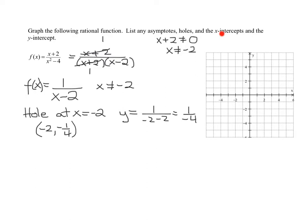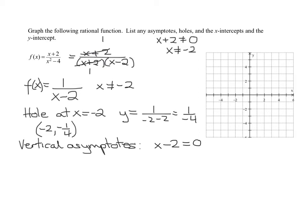Now we need to find asymptotes, x and y intercepts, using the simplified version of the function. For vertical asymptotes, we set the denominator of the reduced form equal to 0. So x minus 2 equals 0, giving us a vertical asymptote at x equals 2.